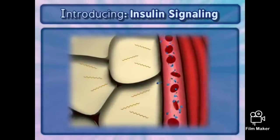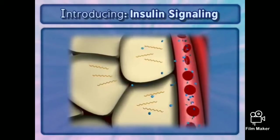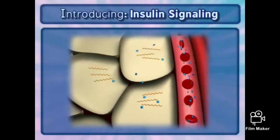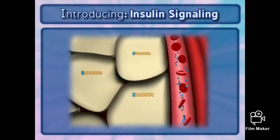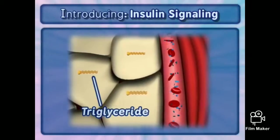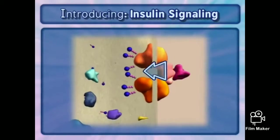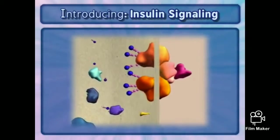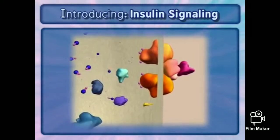In fat cells, glucose is used for triglyceride production and acts as an important energy reserve molecule. Here, we will illustrate the signaling pathway that occurs when glucose is at high levels.